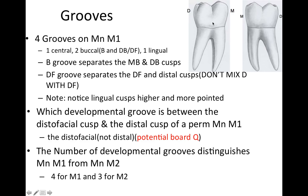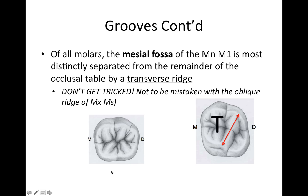The number of developmental grooves distinguishes the mandibular first molar from the second molar: this tooth has four grooves, while the second molar has three. Also, of all the molars, the mesial fossa of the mandibular first molar is most distinctly separated from the remainder of the occlusal table by a transverse ridge. Don't be tricked — oblique ridge is a distractor here, because the only tooth with an oblique ridge is the maxillary molar.